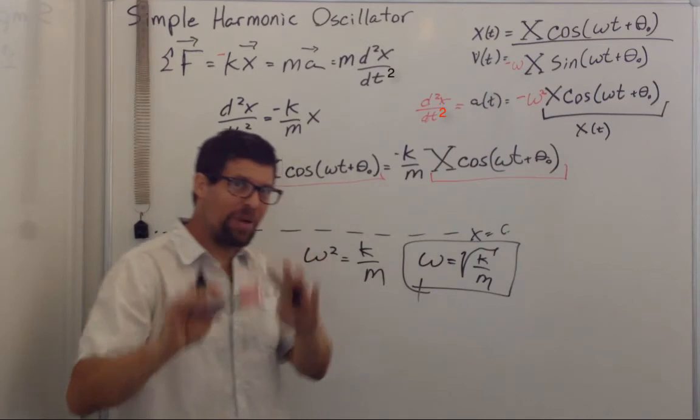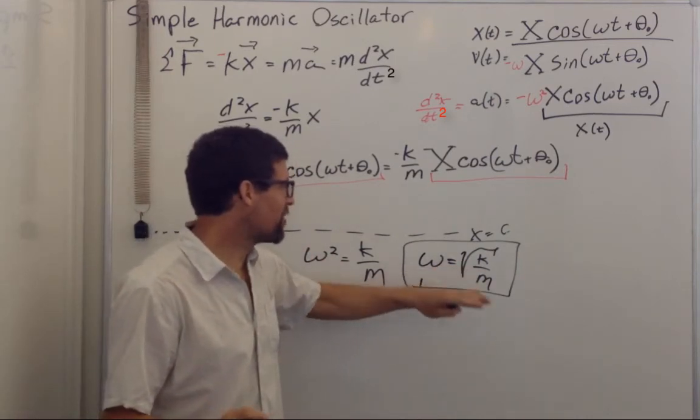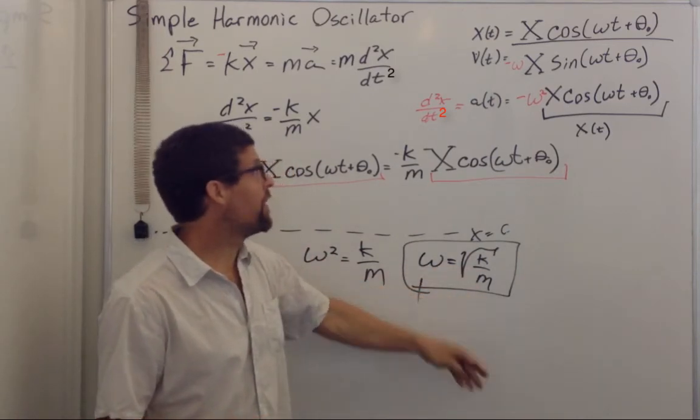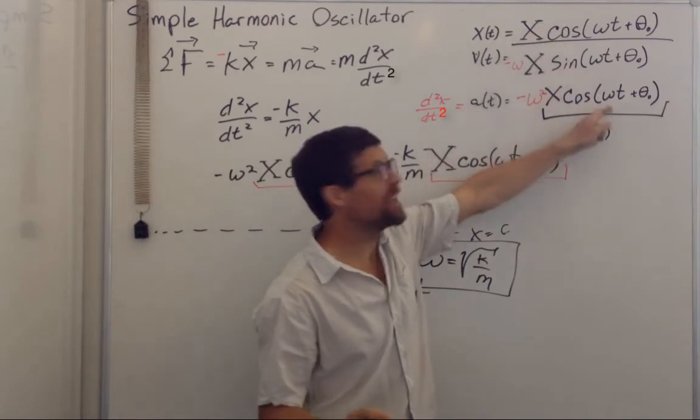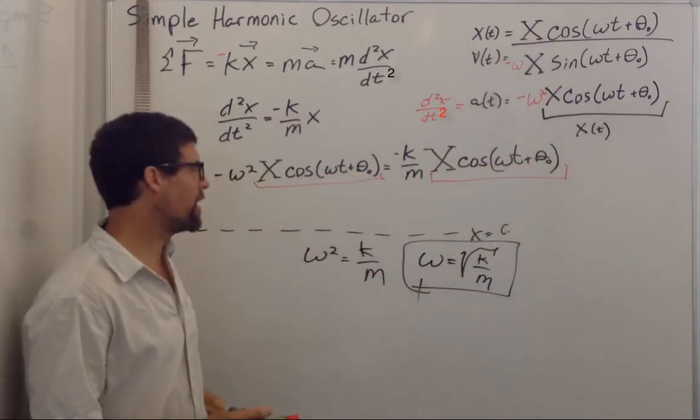Or omega, the oscillation frequency, is equal to the square root of k over m. This is very important. Mathematicians, pay attention. The words are this is an important eigenvalue that comes out when we put the eigenfunction into our equation.